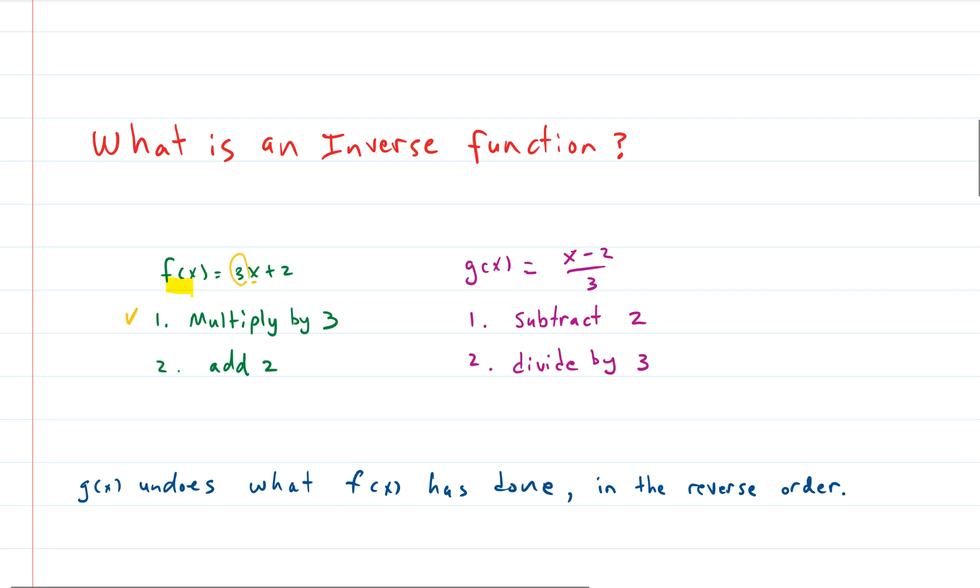So in our specific situation here we have an input which is X, and the first thing done to it is it's multiplied by 3. So whatever you put into the function, the first thing that will happen is that thing will be multiplied by 3. The second thing that will happen is whatever the result is after you multiply by 3, you will add 2 to it.